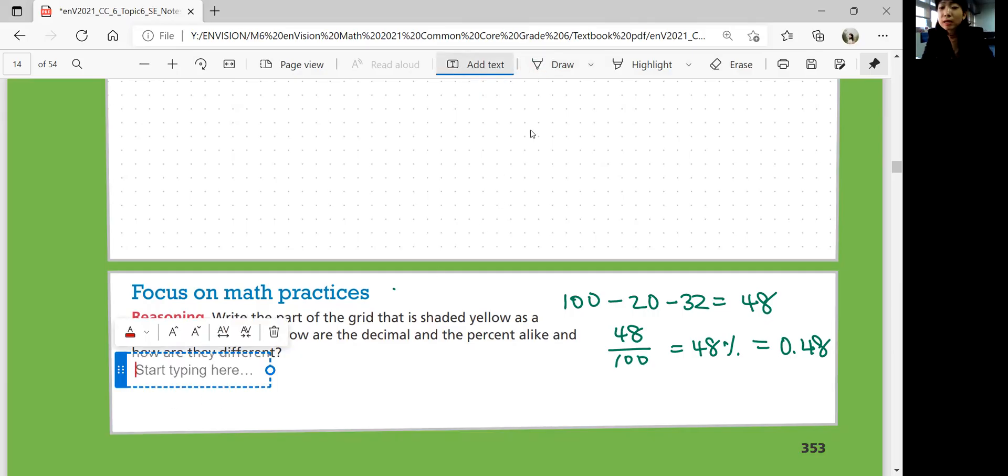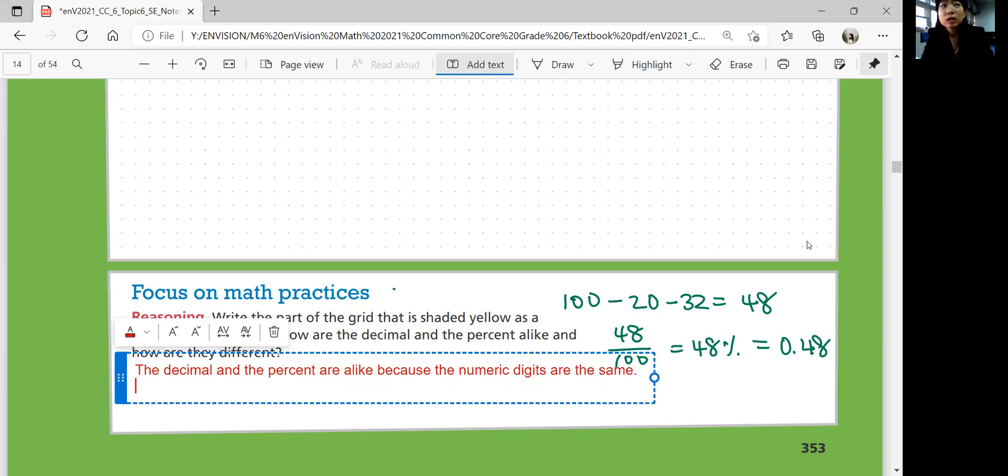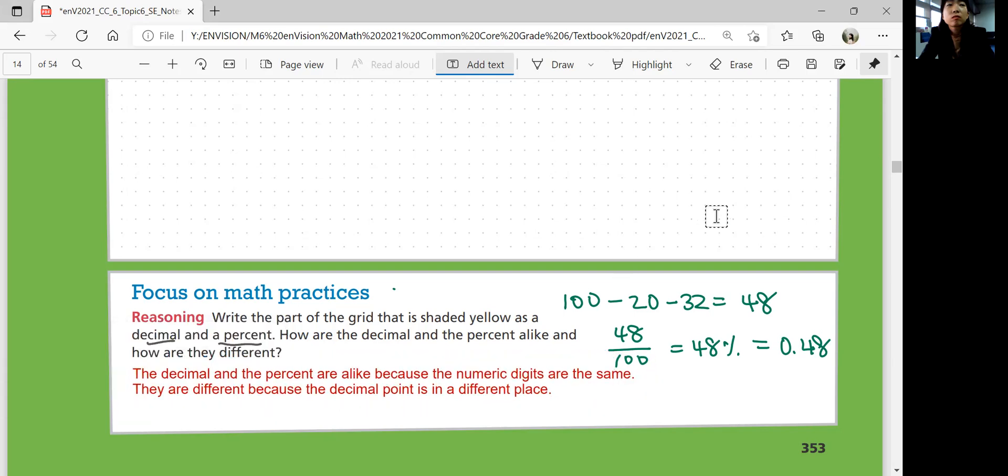So 48 tiles out of 100 is 48%. What is the decimal? 0.48. So how could you explain that? How are the decimals and percent alike? How are they different? The decimal and the percent are alike because the numeric digits are the same. Do you see that? 4.8 and 4.8. Numeric digits are the same. So they're similar, but are they exactly the same? No. Why are they different? They're different because the decimal point is in a different place.